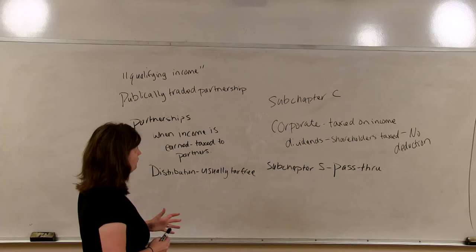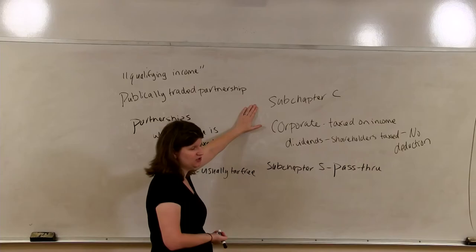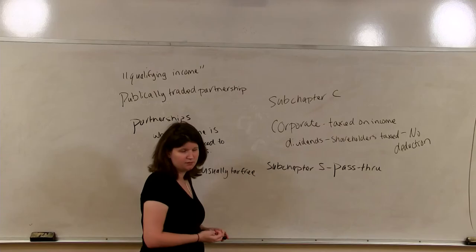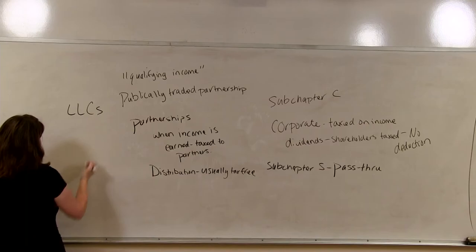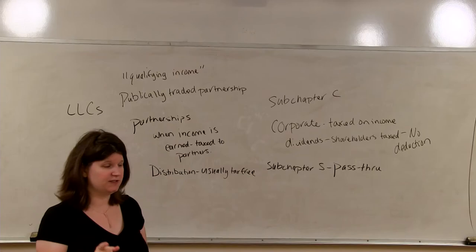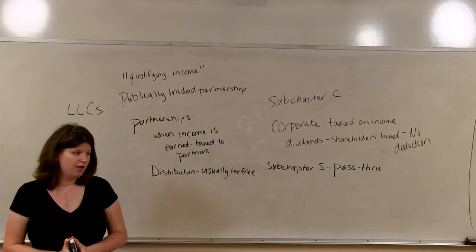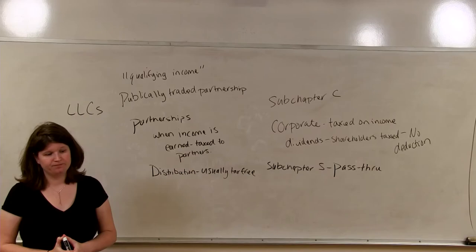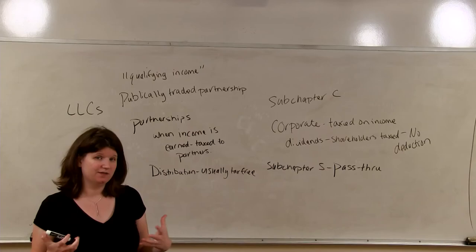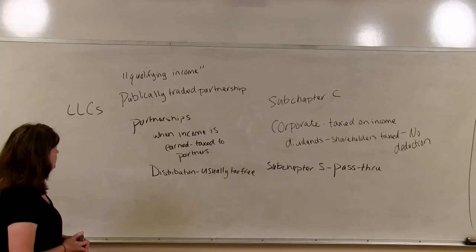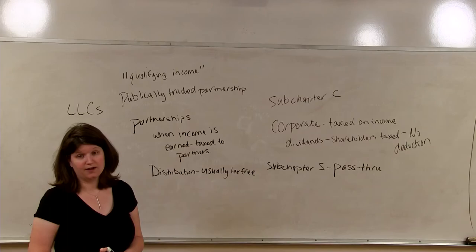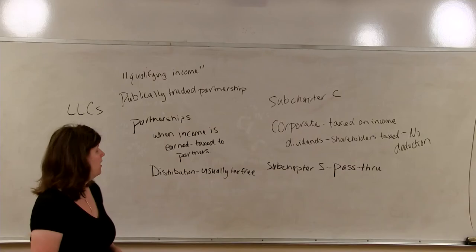One way that companies have tried to get around this whole concept of double taxation for C-Corps is by the creation of LLCs. So, I'm sure you have heard of LLCs, right? Limited liability companies. Limited liability companies are interesting because they provide a lot of tax flexibility. They are essentially corporations for state law purposes in that you get the benefits of being a corporation. Limited liability and that sort of thing. But for tax purposes, they can actually be taxed a lot of different ways. Four different ways. There's really only four ways you can be taxed for entities.